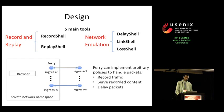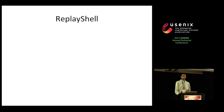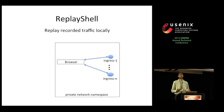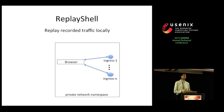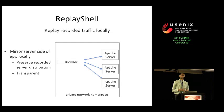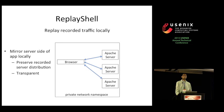Replay shell is used to replay recorded traffic locally. It does not need egress interfaces because it only serves recorded content — no traffic has to leave its namespace. Replay shell creates an ingress interface for each IP address contacted during recording and runs a separate Apache server on each one. By having an interface and server for each recorded server, replay shell preserves the multi-server nature of a recorded web application, and replaying is totally transparent to a client application.